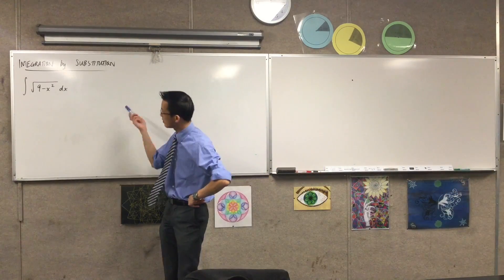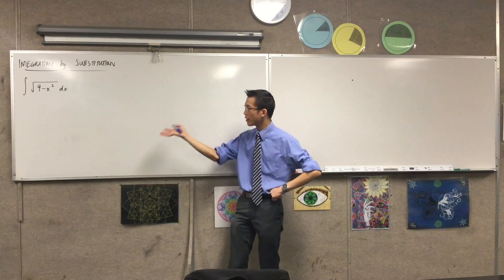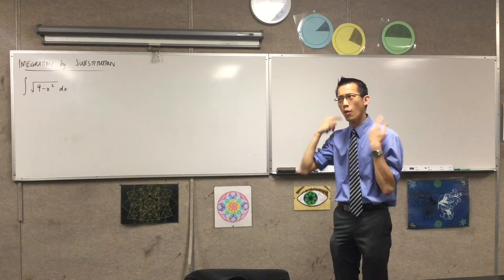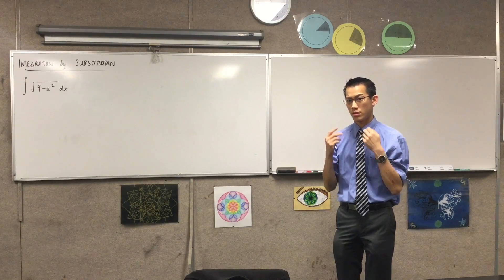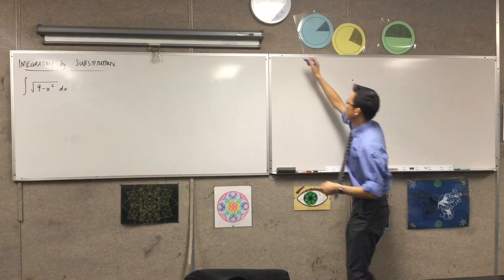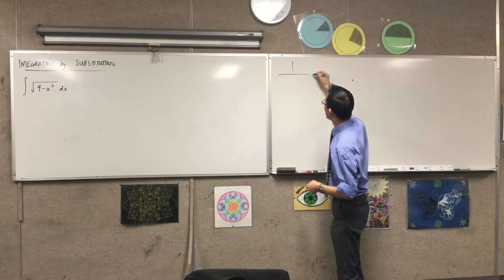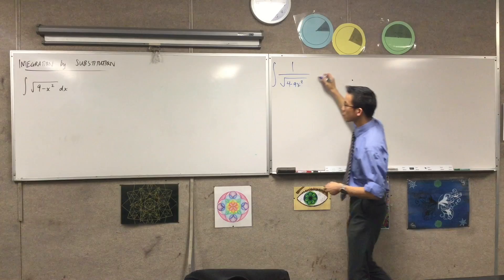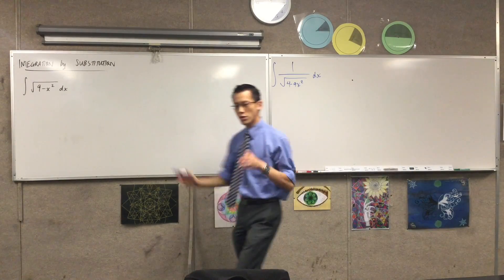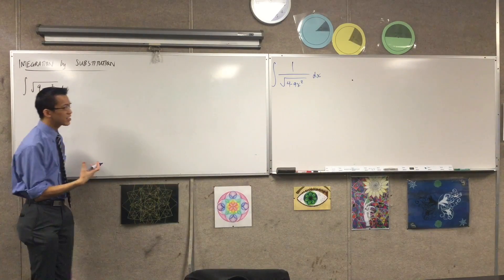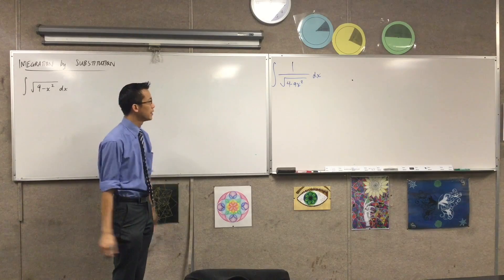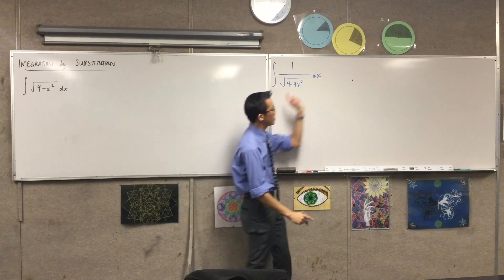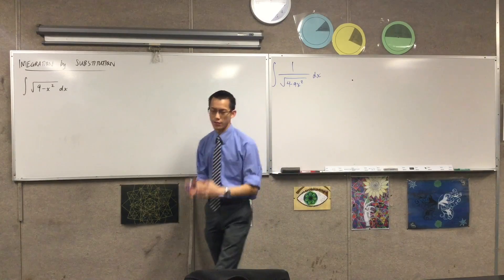We're continuing to look at integration by substitution. Before we get to this example, think about what we've looked at so far. Here's an example which looks remarkably similar to something we looked at before, and we saw that if you do a bit of twisting and turning you can use integration by substitution and see this should turn into a sine inverse.